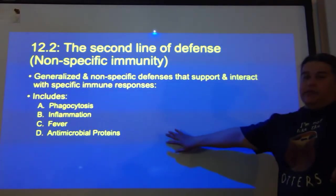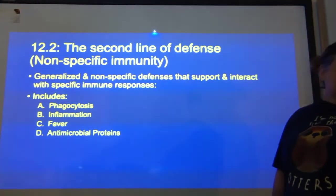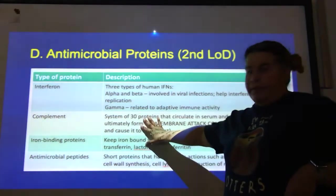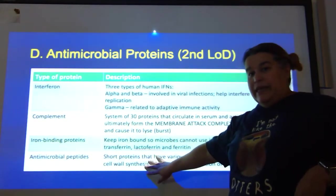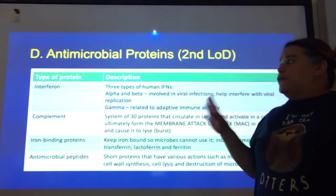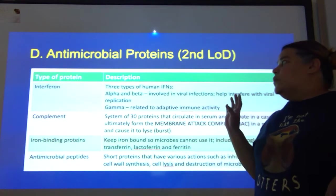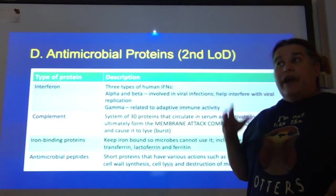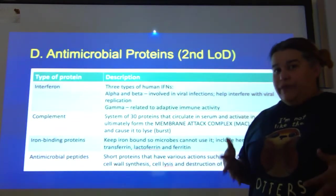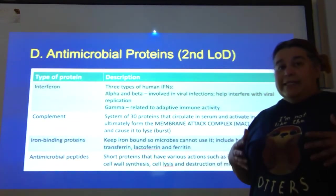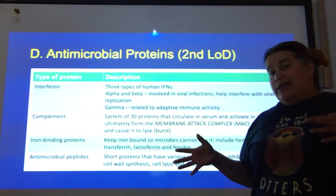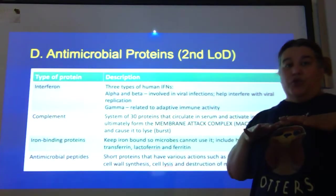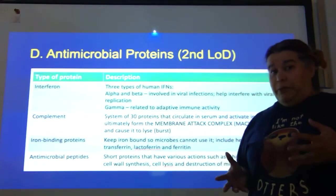Now let's talk about antimicrobial proteins. There are four I'll mention: interferon, the complement system, iron-binding proteins, and antimicrobial proteins. Interferon is a chemical classically known to interfere with a virus's ability to produce more viruses, by giving advanced warning to a neighboring cell so it can take steps to inhibit the virus from working properly within it.